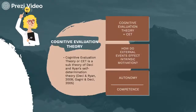So what is Cognitive Evaluation Theory? Cognitive Evaluation Theory, or CET, is a sub-theory of Deci and Ryan's Self-Determination Theory. It is focused on the way extrinsic events affect intrinsic motivation.